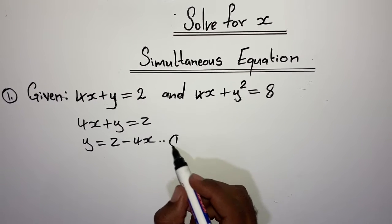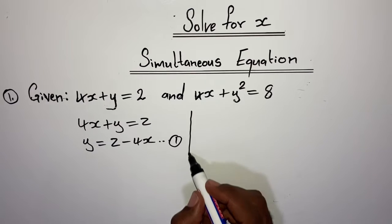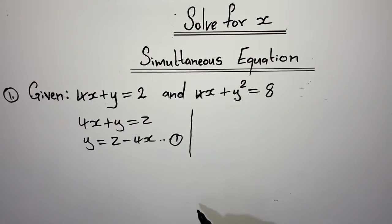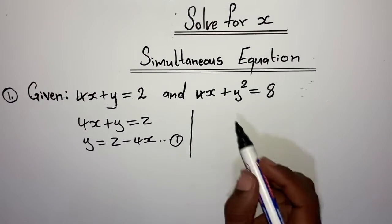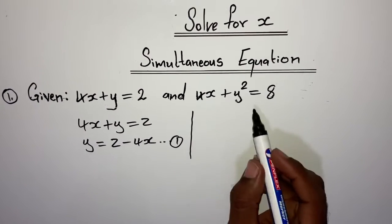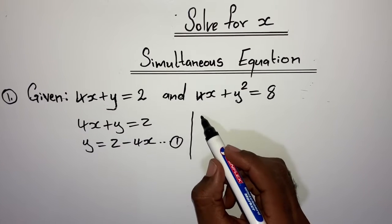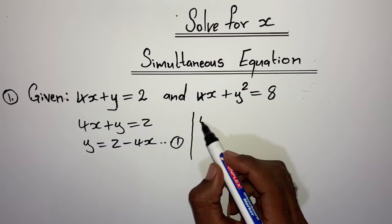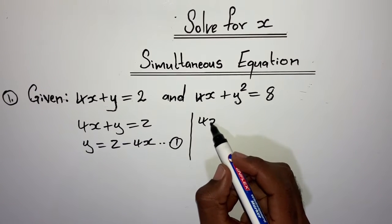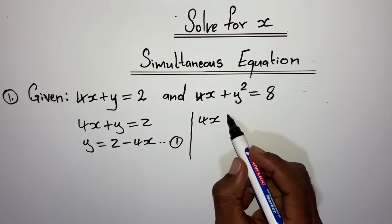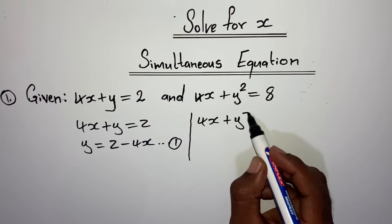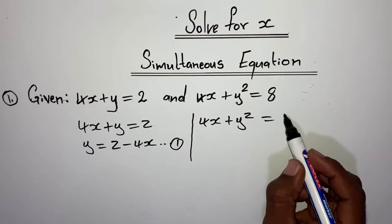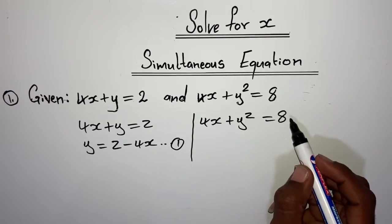4x plus y is equal to 2. I make my y the subject of the formula. y is equal to 2, then I take the 4x to the other side — the sign will have to change — minus 4x. The equation you created, you make it to be your first equation. Then you go on to look at the second equation that was given, which is 4x plus y squared is equal to 8.